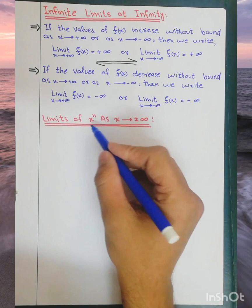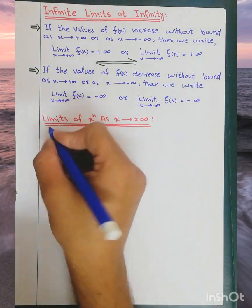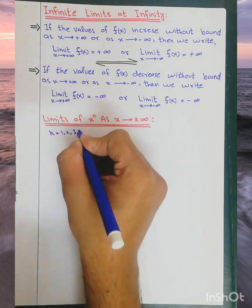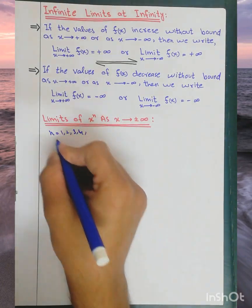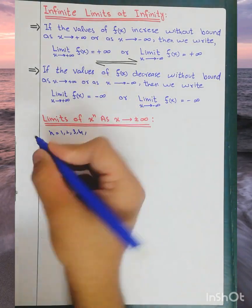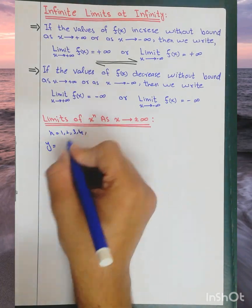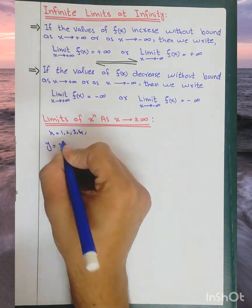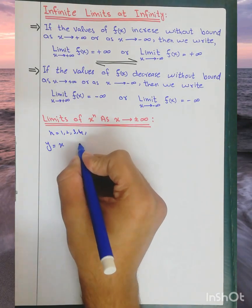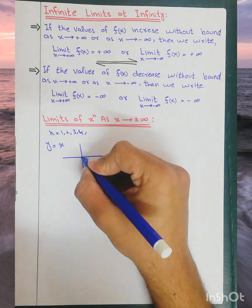Now we have limits of x to the power n as x approaches plus or minus infinity, where n equals 1, 2, 3, 4, and so on. We find the limit for x, taking the function y equals x, which is the function y equals x to the power 1.